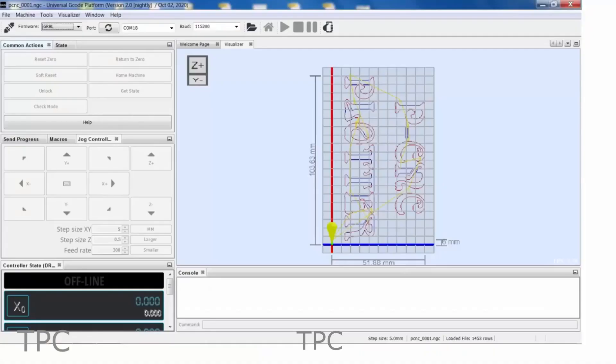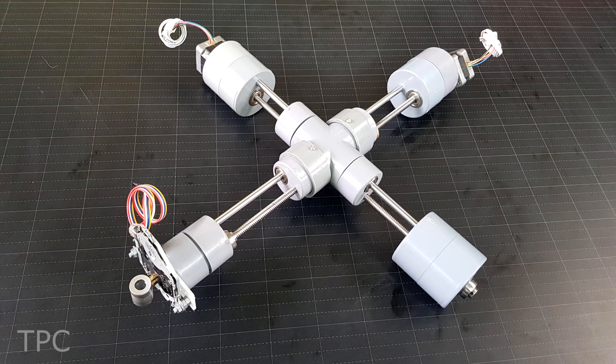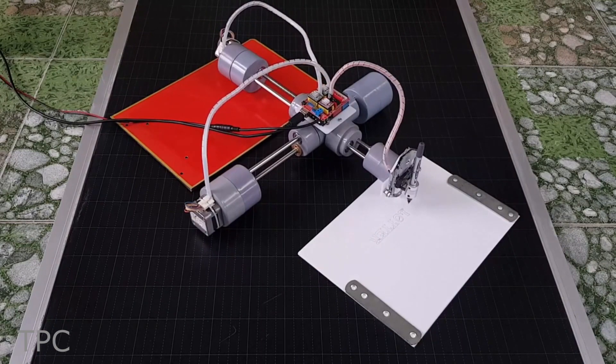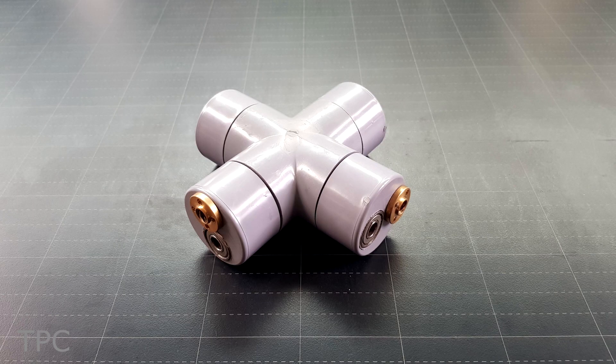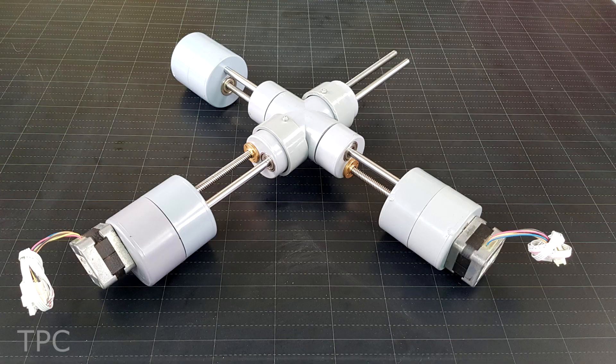It takes incoming G-code and translates it into motor movements. The X-axis consists of a single NEMA 17 stepper motor that actuates a threaded rod to slide the rest of the device along a path.